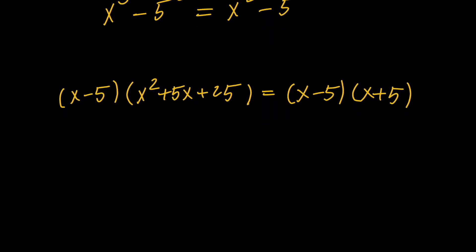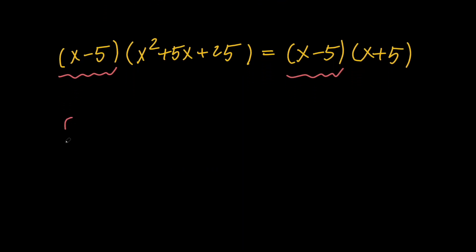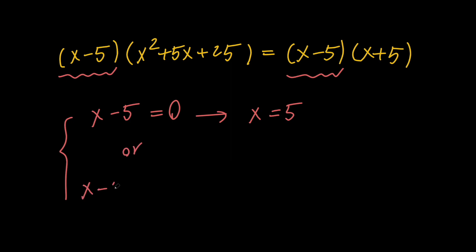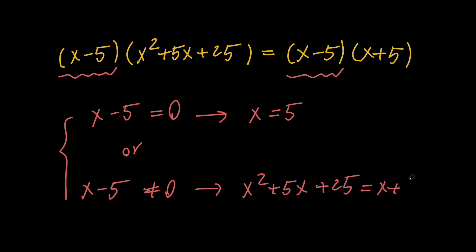Now if you look at this, you can see that we have x minus 5 on both sides, and based on this we can say that we have two scenarios. Either x minus 5 equals 0, which indicates that x equals 5, or x minus 5 is not equal to 0, which indicates that we can divide both sides by x minus 5 and get x squared plus 5x plus 25 equals x plus 5.